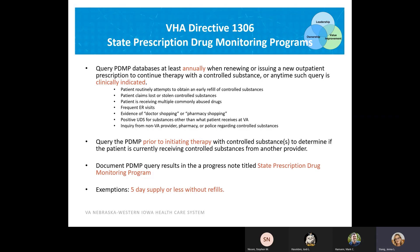It's required that we access the PDMP at least annually when renewing or issuing a new outpatient prescription for continued therapy with a controlled substance, or any time it is clinically indicated — for instance, if there's an early controlled substance refill, any claim that a patient has of lost or stolen substances, frequent ER visits, concern for doctor shopping, or if a patient's UDS is positive for a substance other than what a patient has received through the VA. A query also needs to be done any time a provider is initiating therapy with a controlled substance.